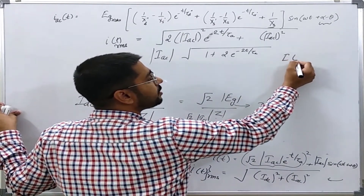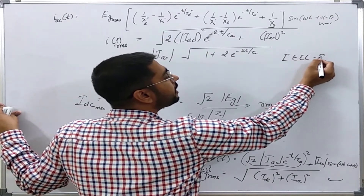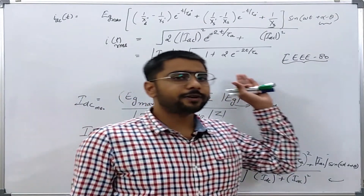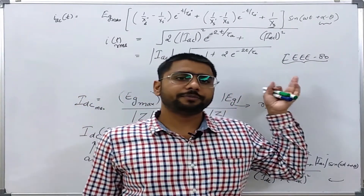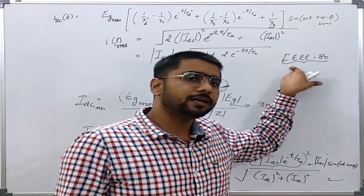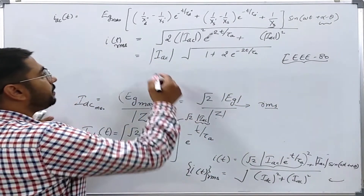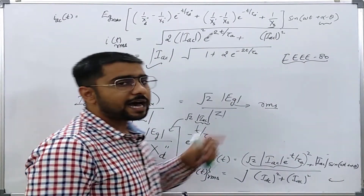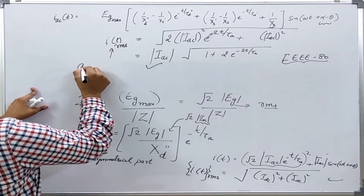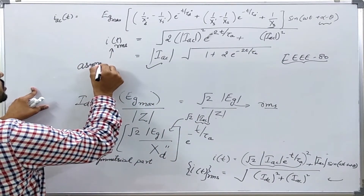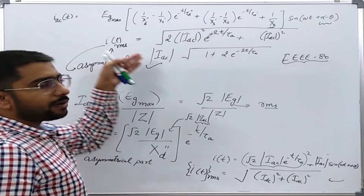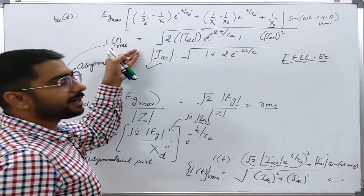That's why I have tried to show this expression — although it might not come in exams, practically when we are going to deal with the design of the earth mat, this expression will be utilized. The RMS value of the fault current here is the asymmetrical fault current, because it also contains the DC part, and this is quite equivalent to the RMS value of the asymmetrical fault current.